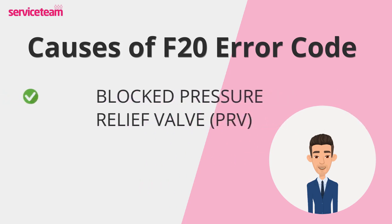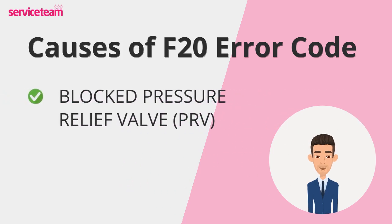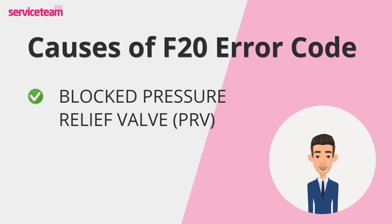The PRV is like your boiler's pressure manager, keeping things in balance. But when it's blocked or faulty, it can't do its job. This results in excess pressure, overheating, and the F20 error.